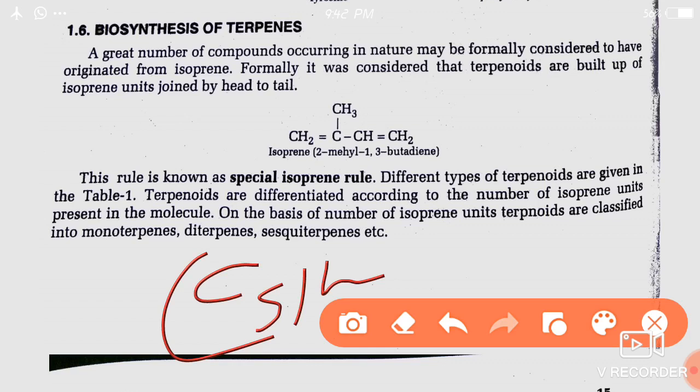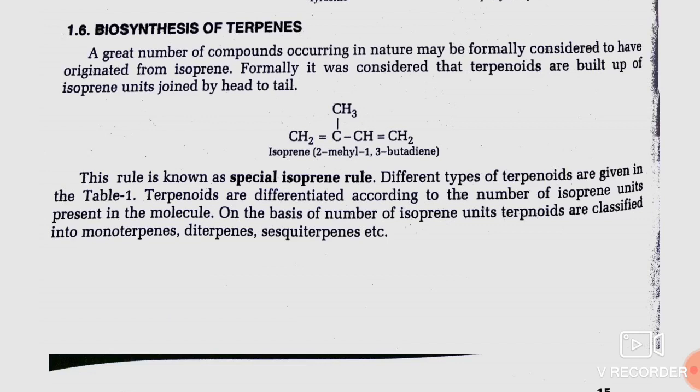Therefore, terpenes are also denoted as isoprenoids or terpenoids. In nature, terpenes occur predominantly as hydrocarbons, alcohols and their glycosides, ethers, aldehydes, ketones, carboxylic acids, and esters.